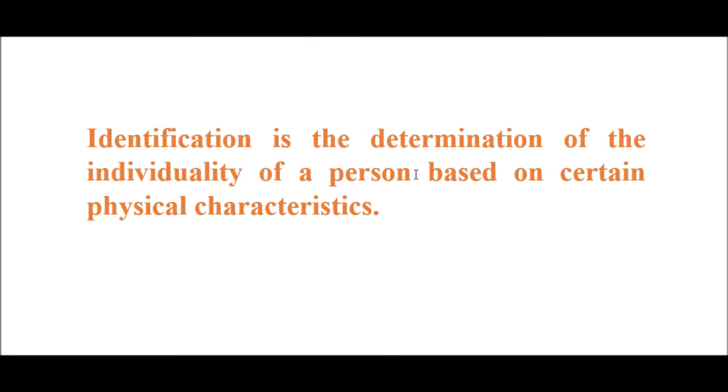Identification can be complete identification if we know each and everything related to any person, or it can be partial identification if someone knows about age, sex, and similar details — this is a partial identification.